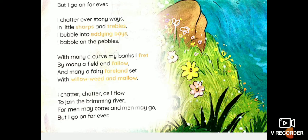'I babble on pebbles.' Babble here, again, means it is a style of talking, like the small young children — one or two years of age — woh theek se baat nahi karte. So they babble, unki jo hasha hoti hai, that is called babble. So brook says, I babble karte ho kahaan pe — jab woh chote-chote pebbles se guzarti hai.